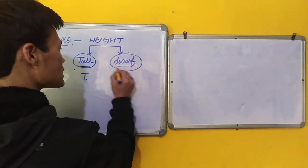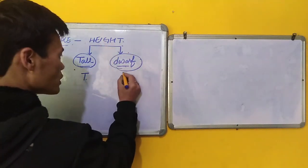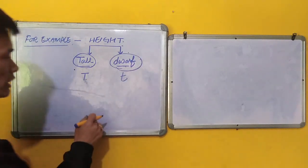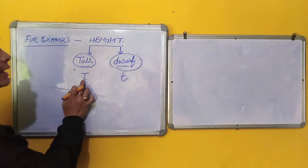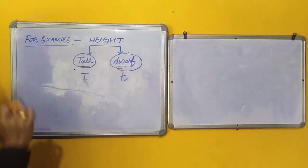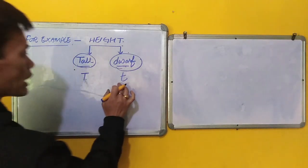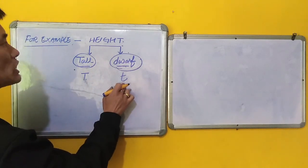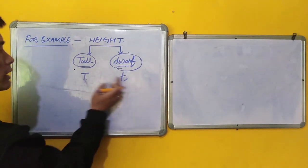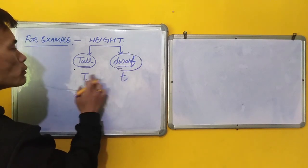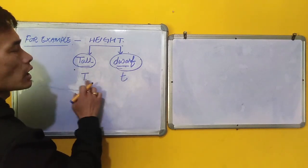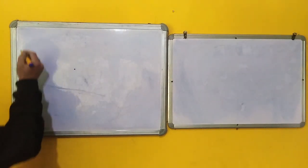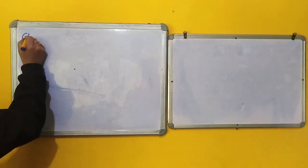And if this particular type of height is controlled by a gene, capital T, then this height is controlled by a small t. In this case, the capital T, which is a gene for height, as well as a small t, which is also a gene for height, are alternative forms of each other.